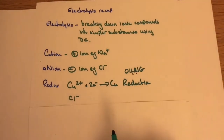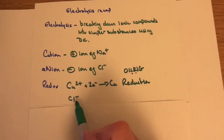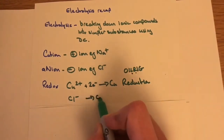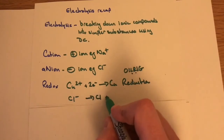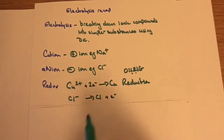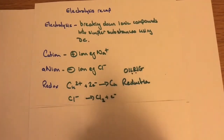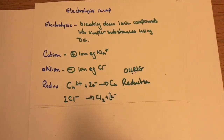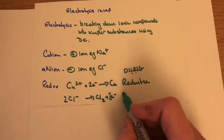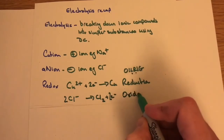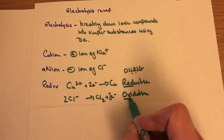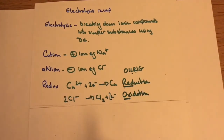OIL RIG: Oxidation Is Loss, Reduction Is Gain. So gaining electrons is reduction. Now for the opposite: here's a chloride ion. To turn it into chlorine we need to lose this electron — that electron is being lost. Chlorine is diatomic, so we need two ions, releasing two electrons. This loss of electrons is oxidation. Together we have a redox reaction.